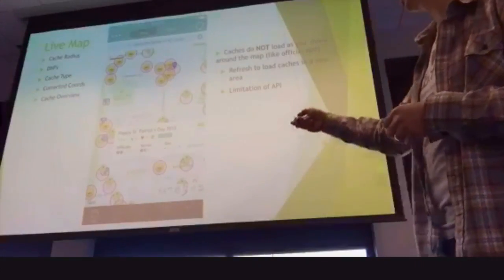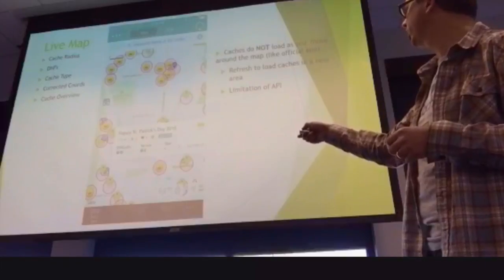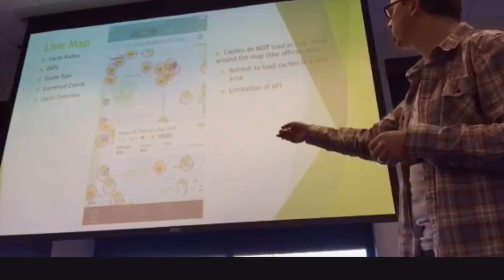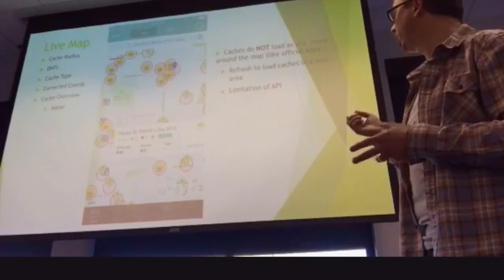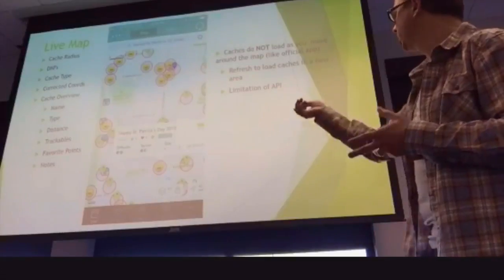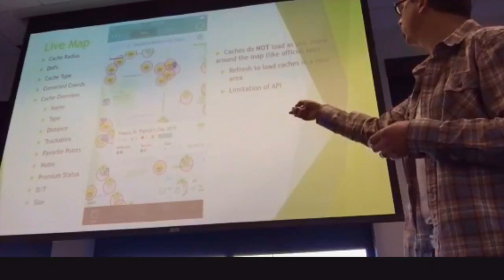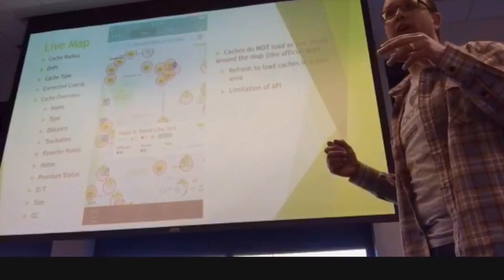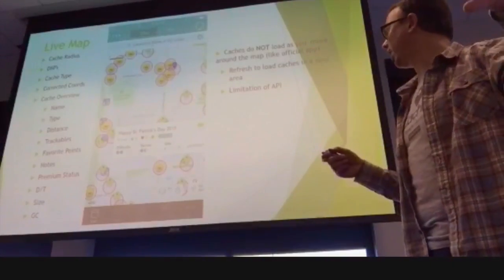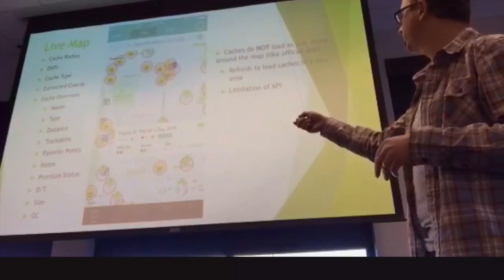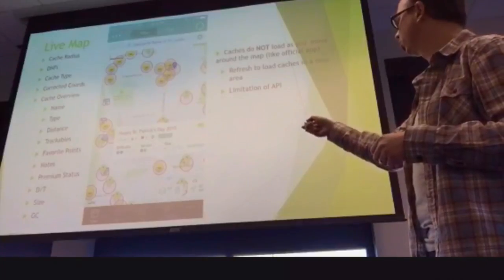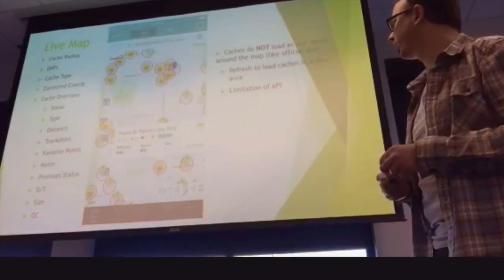Cache overview: when you click on a cache, you'll see a lot of information right as it pulls up — the name, geocache type, distance, number of trackables, favorite points, notes if you've added any, difficulty and terrain rating, the size of the cache, and the GC code. So you get a lot of information just as soon as you pull up the cache on the map.